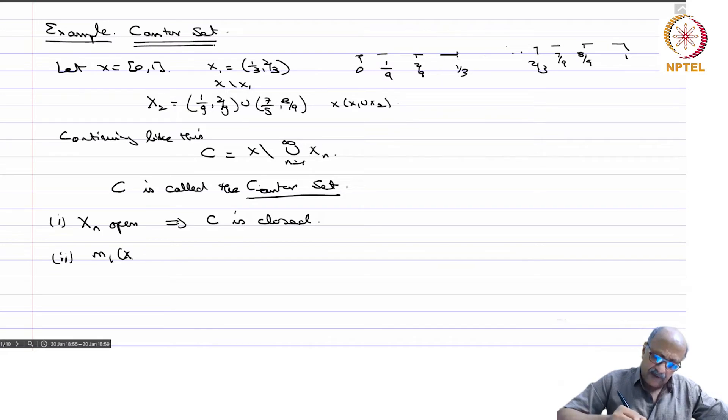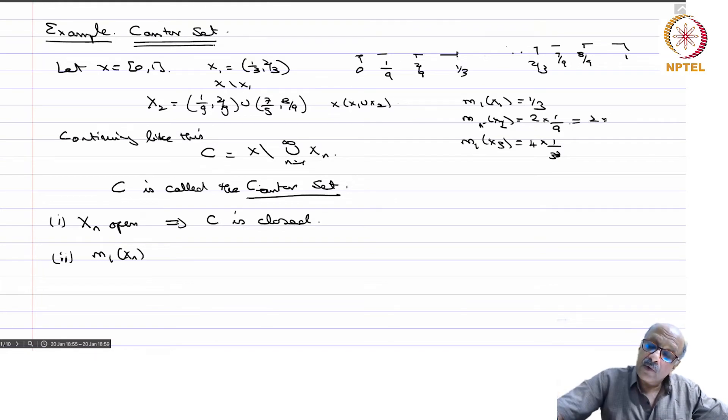Two, measure of xn. So what is measure of x1? m(x1) is equal to 1/3. m(x2) is 2 times 1/9. m(x3) will be there will be 4 such intervals, 1/3 cubed. So this is equal to 2 times 1/3 squared, 4 times 1/3 cubed. So in general inductively, measure of xn is 2^(n-1)/3^n.